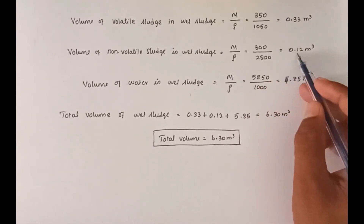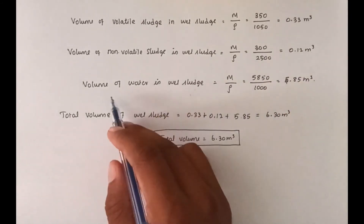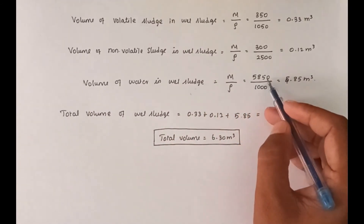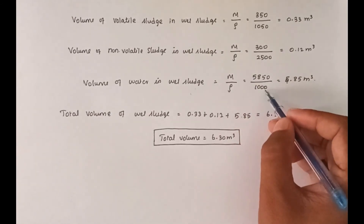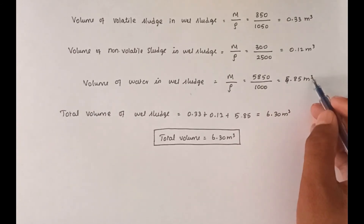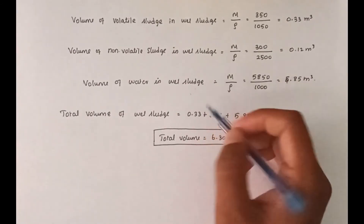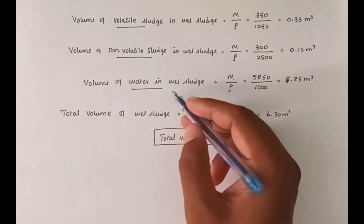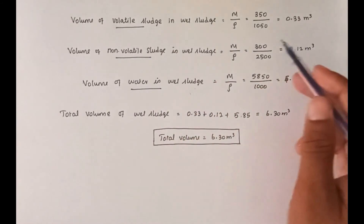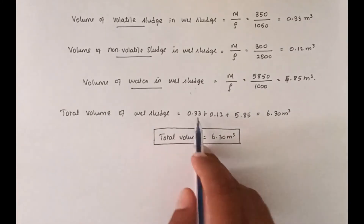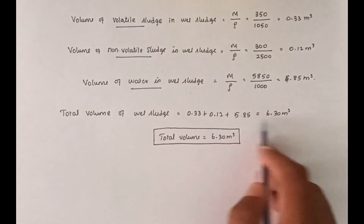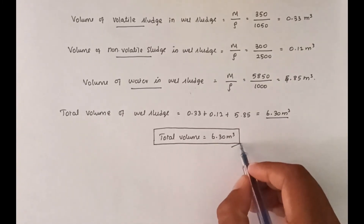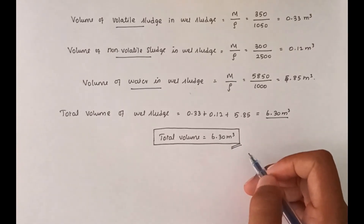Volume of volatile solids = 350/1050 = 0.33 m³. Volume of non-volatile solids = 300/2500 = 0.12 m³. Volume of water = 5850/1000 = 5.85 m³. Total sludge volume = 0.33 + 0.12 + 5.85 = 6.30 m³. This is the calculated sludge volume after digestion. Thank you.